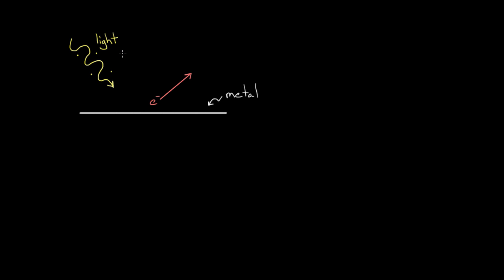In other words, light was only giving energy in certain bunches equal to something called Planck's constant multiplied by the frequency of the light. It either gave all of this energy to the electron or it gave none of the energy to the electron. It was never half and half — it was sort of all or nothing.